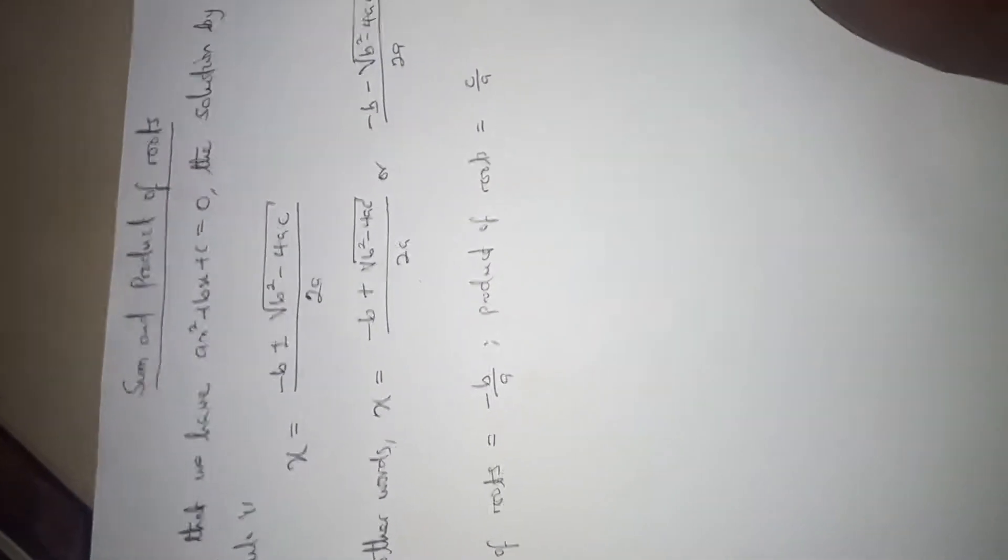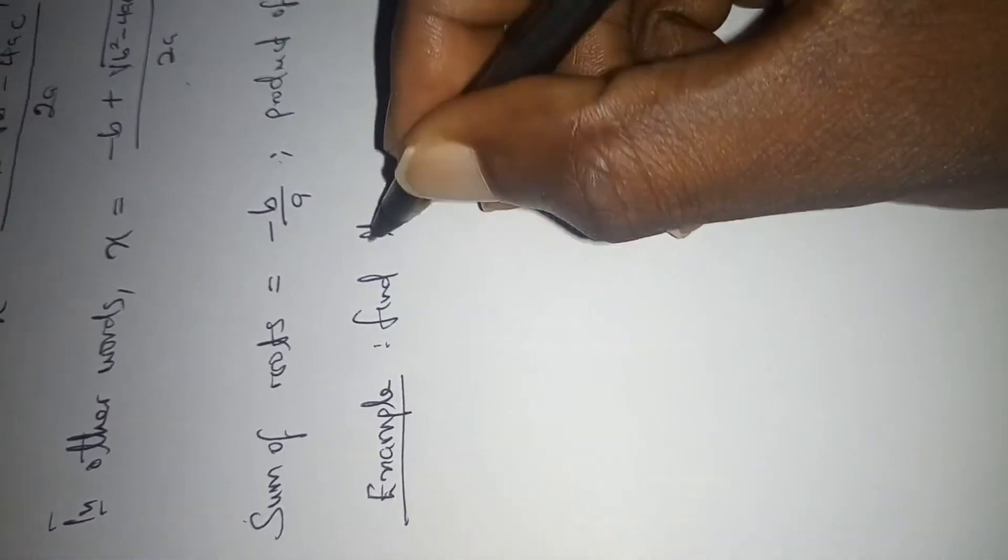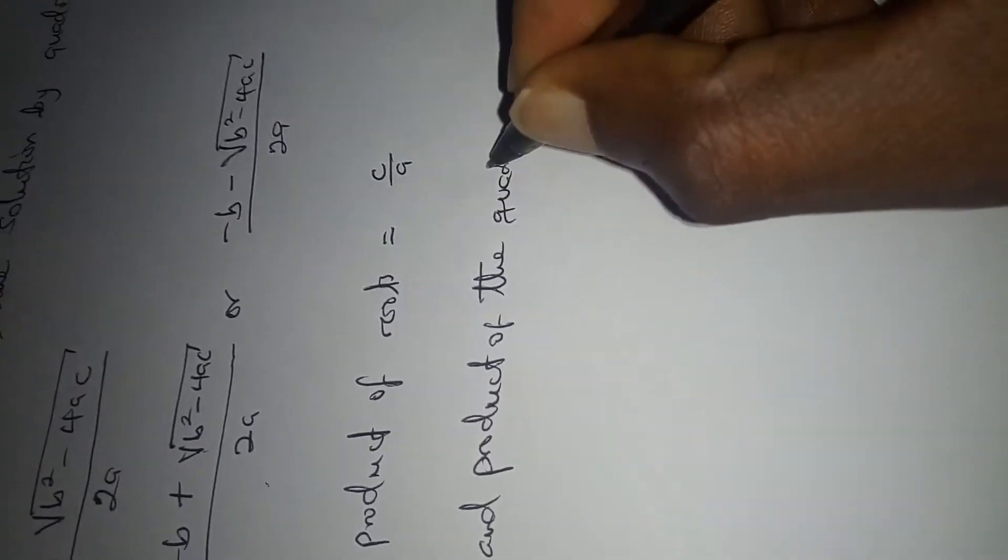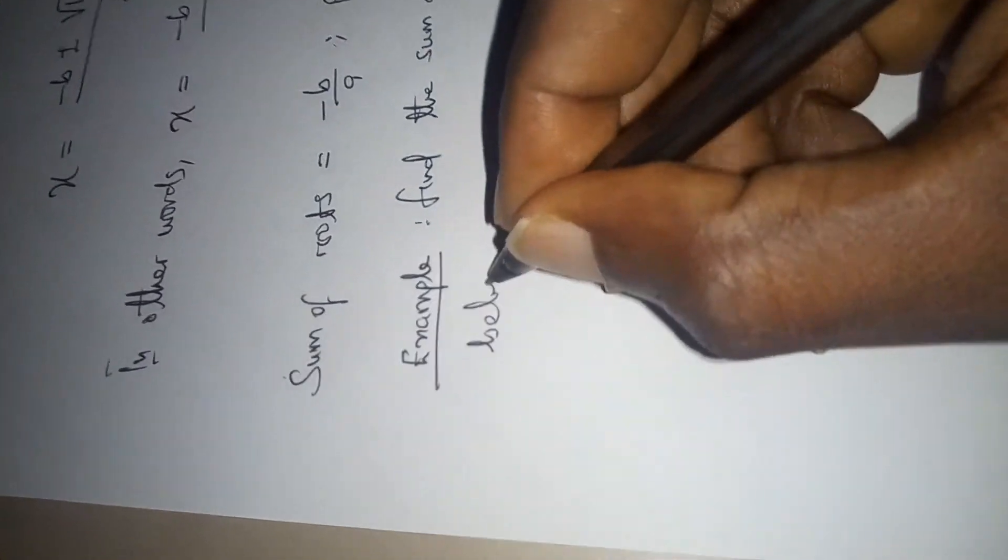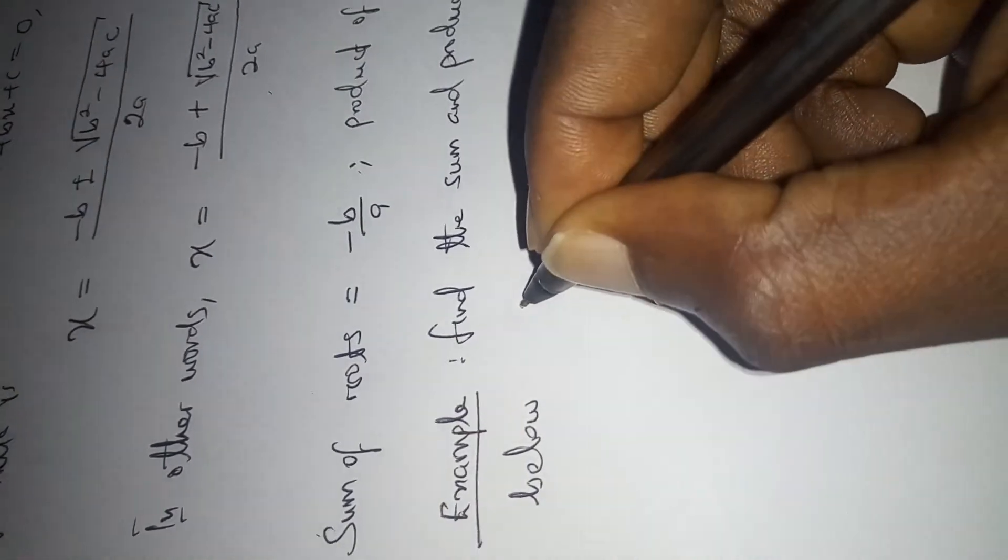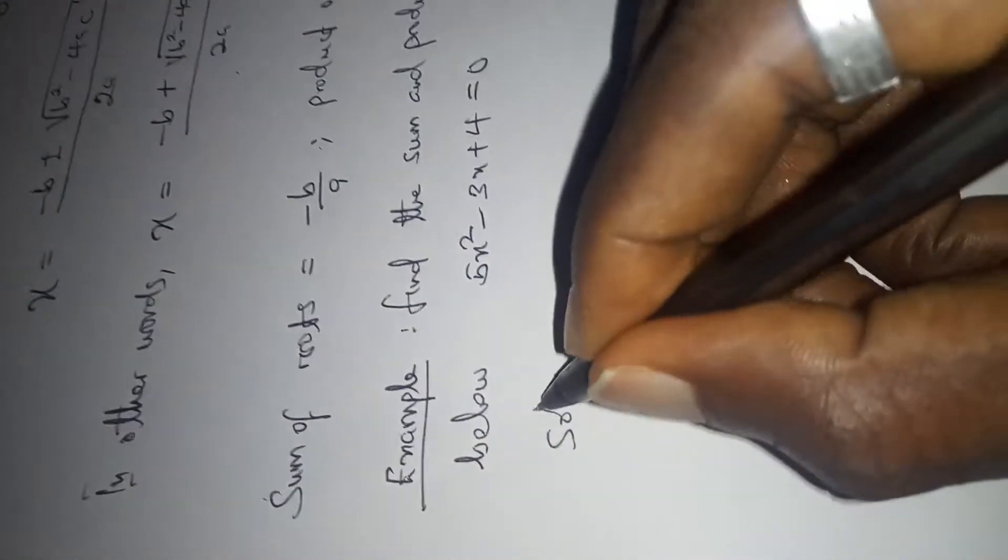Example. Find the sum and product of the roots. You want to find the sum and product of the root of the quadratic equation below: 5x squared minus 3x plus 4 equals 0. So the solution goes thus.